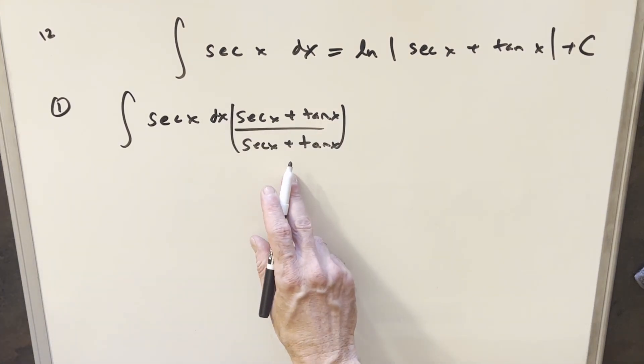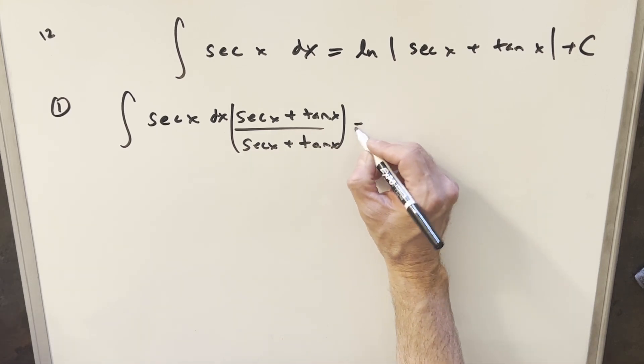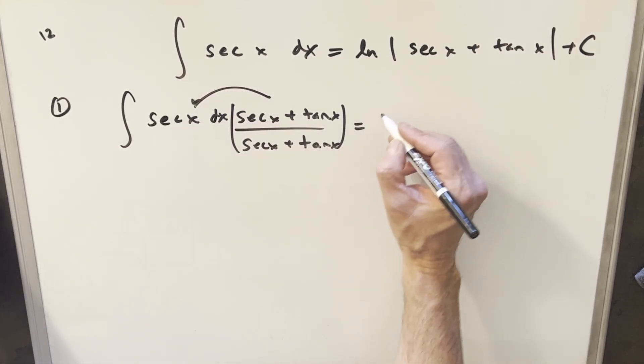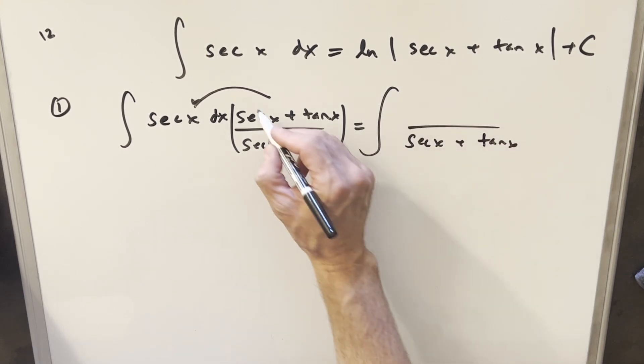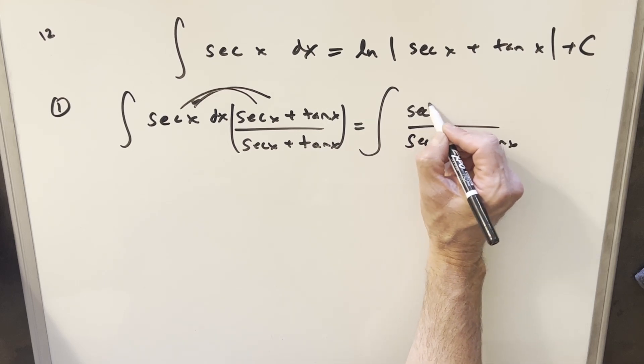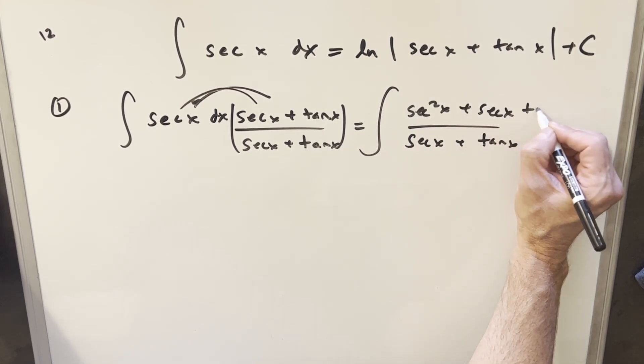The weird thing about this method is you probably wouldn't think of this on your own, but it is going to work out pretty nice. So when I multiply this out, we're gonna have secant x and tan x in the denominator, and then multiplying this through we're gonna end up with secant squared x plus secant x tan x.